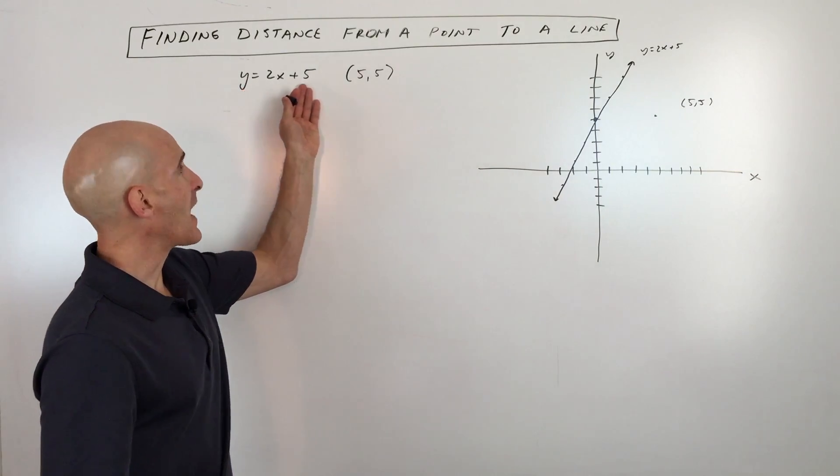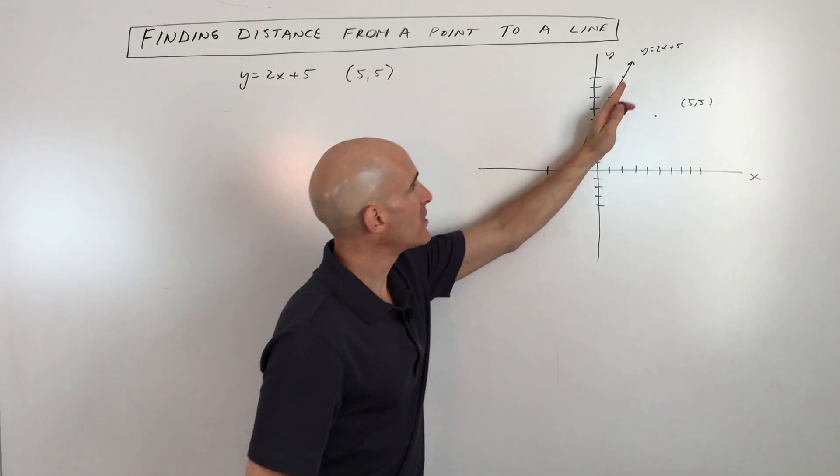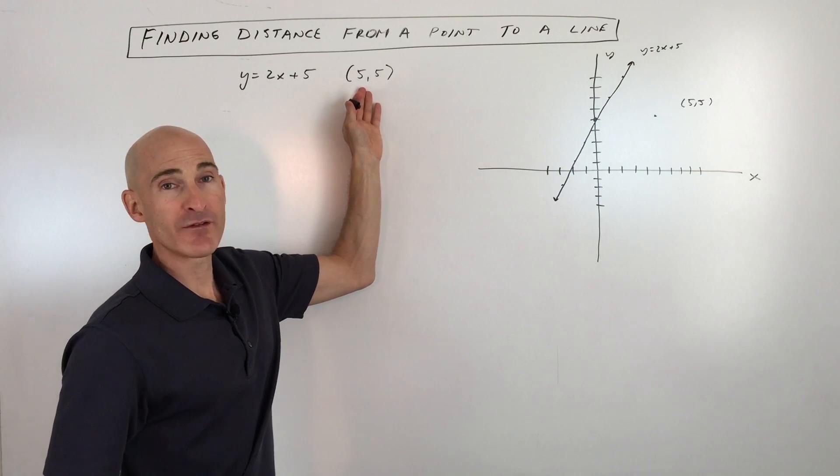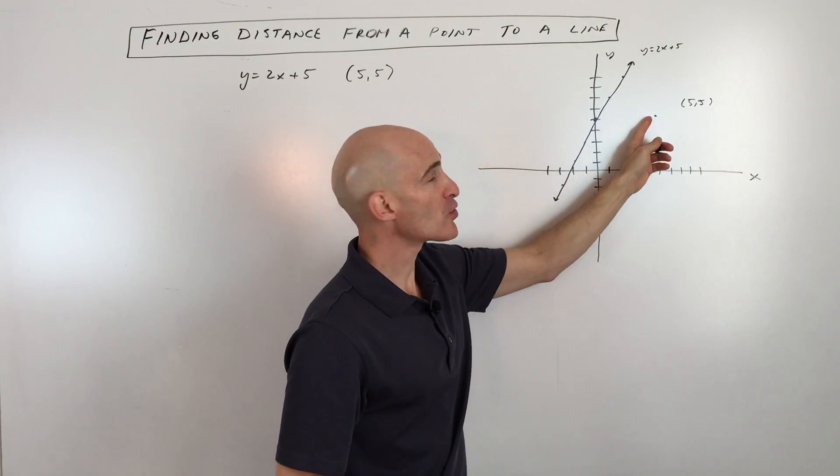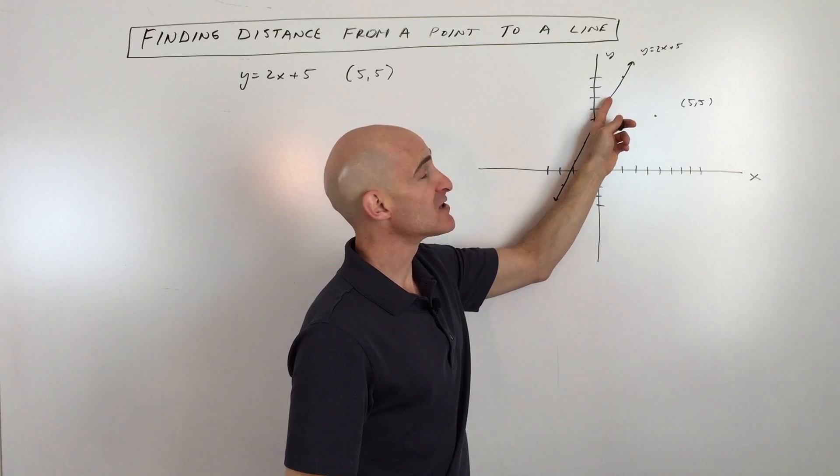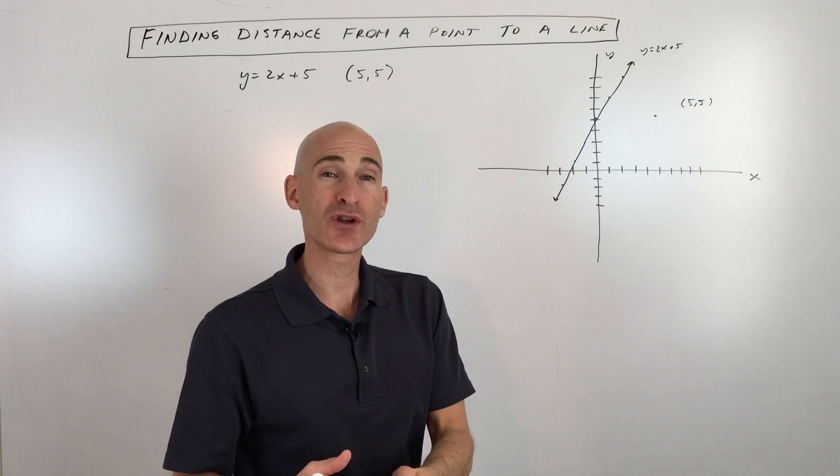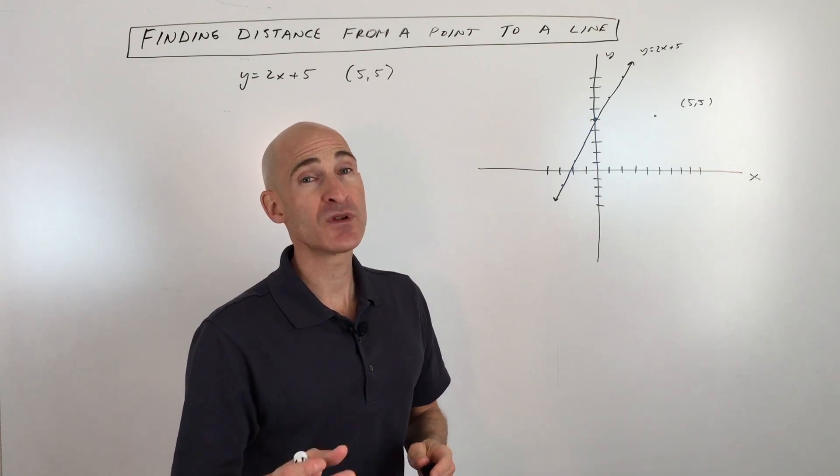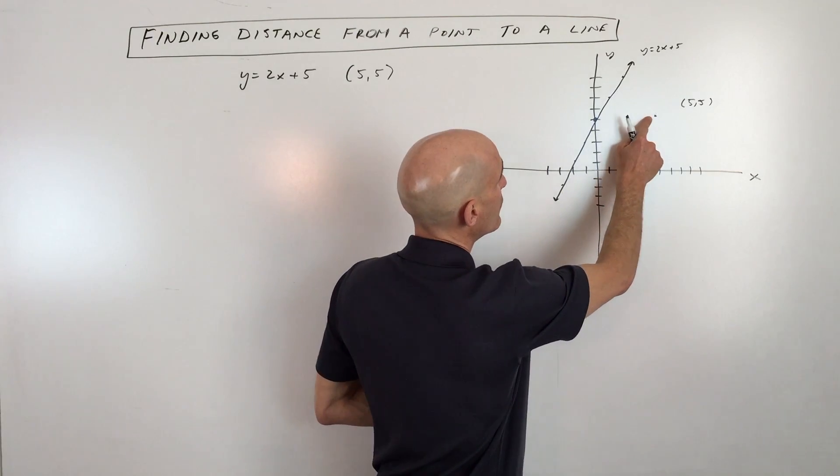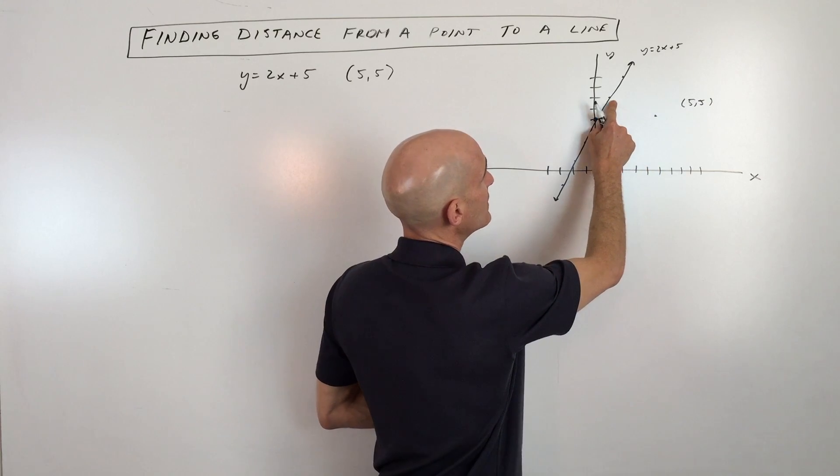So here they're giving us the line y equals 2x plus 5, which I've graphed for us here, and they're giving us this point (5,5), and we're trying to find the shortest distance from this point to this line. Now the thing you want to realize is that when you measure the distance from a point to a line, you're talking about the shortest distance, which is going to be the perpendicular distance. So it's going to be a perpendicular distance from this point to this line.